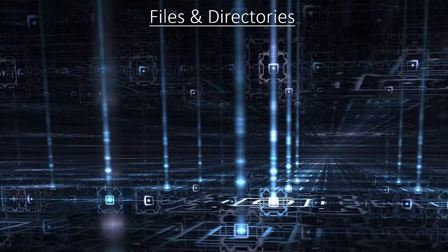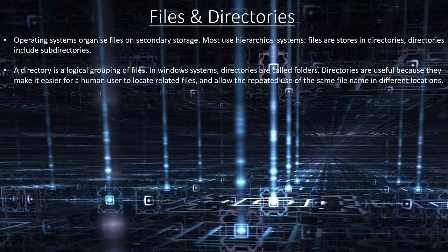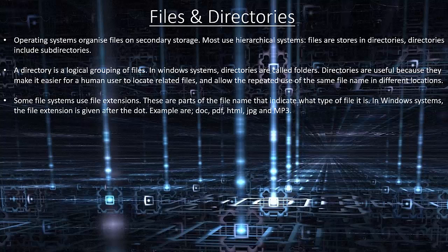Files and directories. Operating systems organise files on secondary storage, and most use hierarchical systems. Files are stored in directories, which include subdirectories. A directory is a logical grouping of files; in Windows systems directories are called folders. Directories make it easy for a user to locate related files and allow repeated use of the same file name in different locations. Some file systems use file extensions — part of the file name that indicates what type of file it is. In Windows the extension is given after the dot, for example: .doc, .pdf, .html, .jpeg, and .mp3.